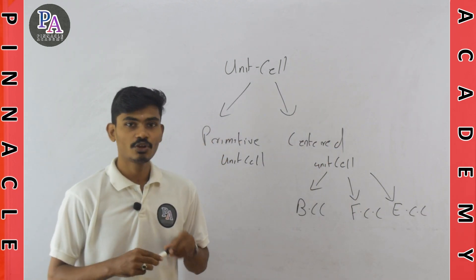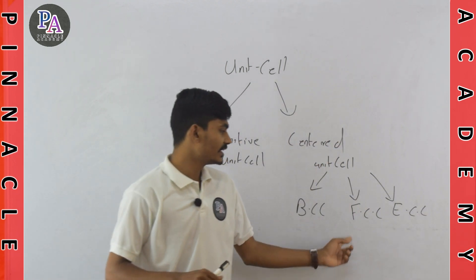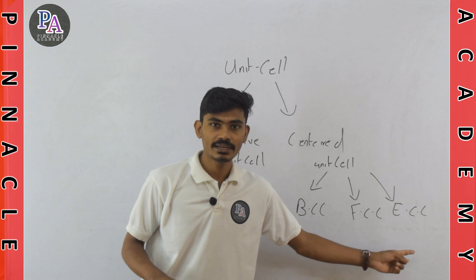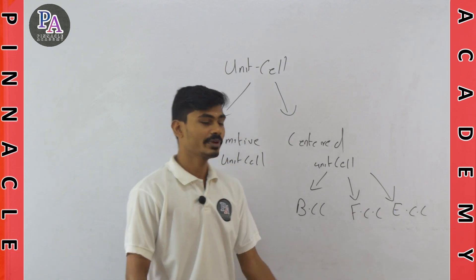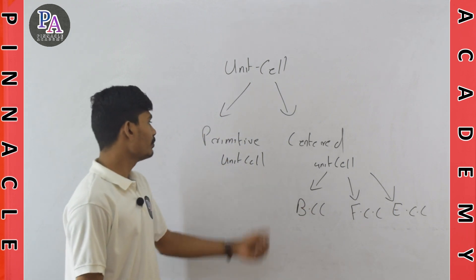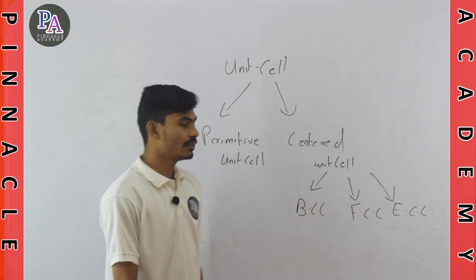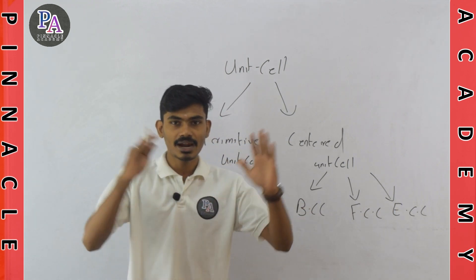The full names are: the first one is body-centered, the second is face-centered, the third is end-centered, and the fourth is primitive unit cell.